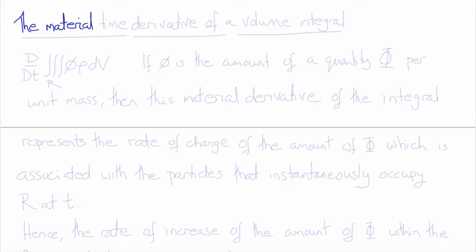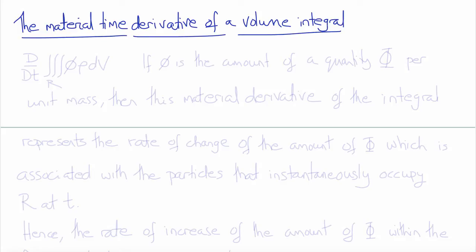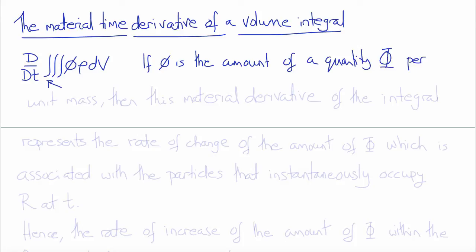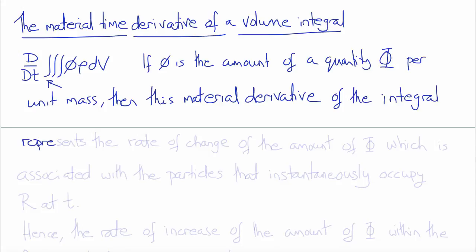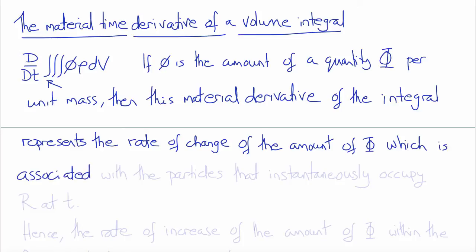Let's take the material time derivative of a volume integral. For this derivation we consider the material time derivative of the volume integral of rho times phi, where phi is some density of another quantity capital Phi — specifically, little phi is the amount of capital Phi per unit mass. This material derivative of the integral therefore represents the rate of change of the amount of capital Phi associated with the particles that instantaneously occupy the region R at time t.